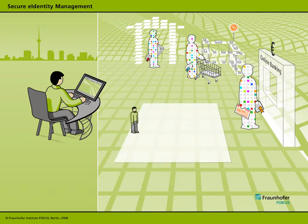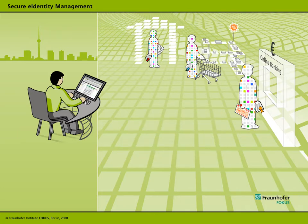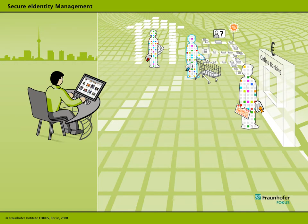At present, identification is a bit of a mess. Customers are forced to use an array of different usernames and passwords, or smart cards — a separate one for each service. Each time we use digital services, we must have our user identity authenticated, which usually involves a bewildering array of usernames and passwords.